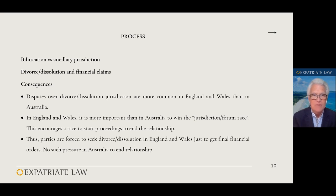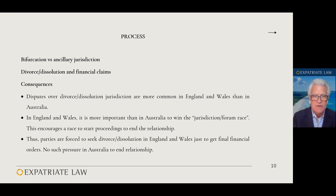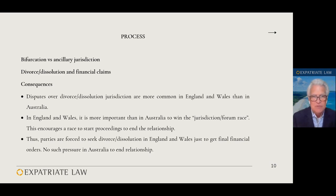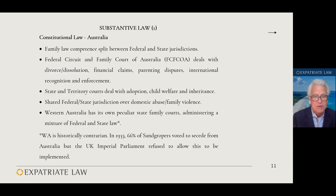This may indicate how important it is to choose the right jurisdiction for divorce and make sure the other party does not beat you to the punch. Some of the consequences are that disputes over divorce or dissolution jurisdiction are more common in England than in Australia. In England, it is more important to win the jurisdiction race, which encourages a race to start proceedings. Therefore, perhaps perversely, in England parties are forced to seek an end to the marriage just to get final financial orders. There is no such pressure in Australia to end the relationship, because you can get a financial order without getting divorced.